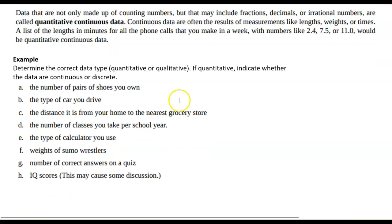Here are some examples. Let's decide if this is quantitative, qualitative, and if it's quantitative, continuous or discrete. The number of pairs of shoes you own. I always like to say, could I find the average of that? I could. This is quantitative, but since it's a whole number, this is going to be discrete.